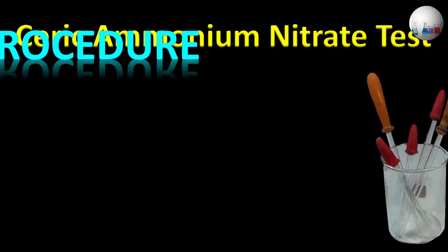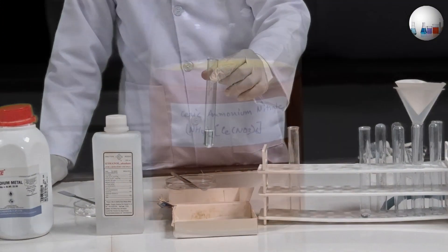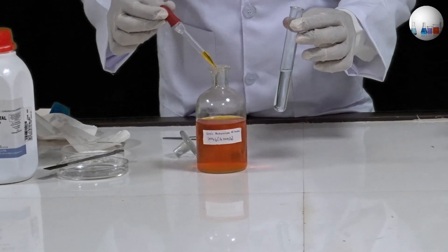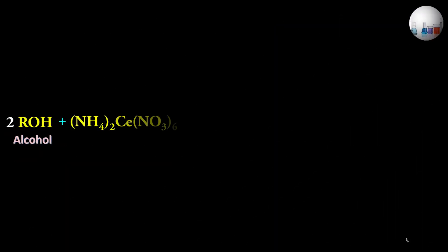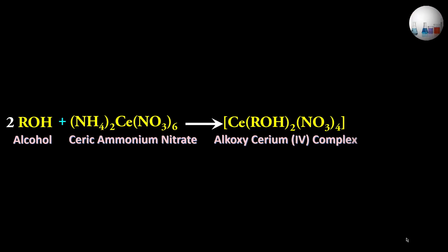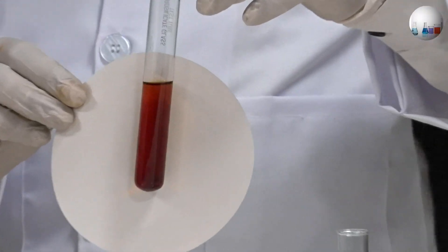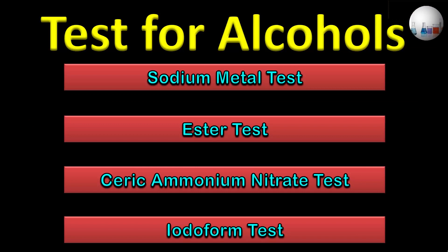Now let us see the procedure of this test. Take a small amount of organic compound in a test tube and add ceric ammonium nitrate reagent using a dropper. Shake the test tube. Alcohols react with ceric ammonium nitrate giving an alkoxy cerium(IV) complex which is blood red in color. That was the ceric ammonium nitrate test.